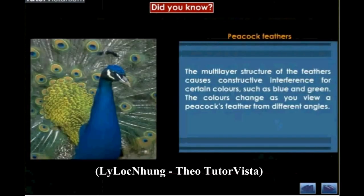The multi-layer structure of the feathers causes constructive interference for certain colours such as blue and green. The colours change as you view a peacock's feather from different angles.